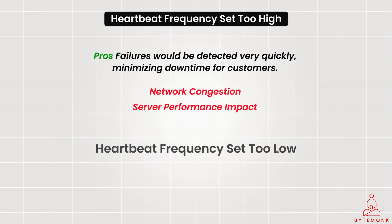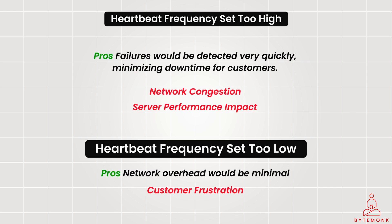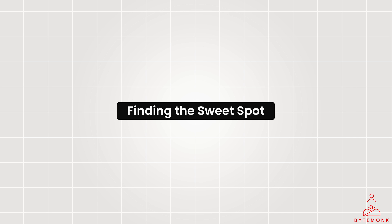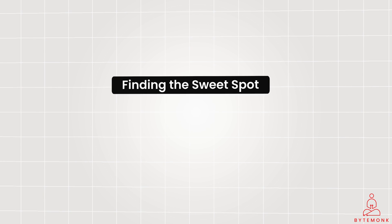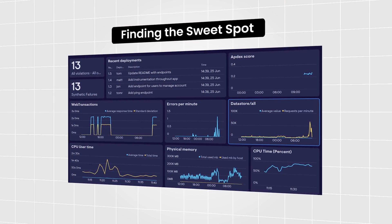If the heartbeat frequency is set too low — say every minute — network overhead would be minimal. However, a whole minute could pass before a failure is detected, leading to customer frustration. A server handling shopping carts could fail, and customers might experience errors during checkout for a full minute before the system reroutes them. During that time, the failed server might not be processing transactions correctly, potentially leading to lost orders or inconsistent data. So we need to find the sweet spot — finding the right balance between responsiveness and overhead is crucial for optimal system performance. Monitoring dashboards can help identify the ideal heartbeat frequency based on real-world system behavior.